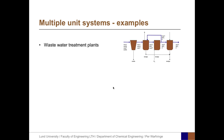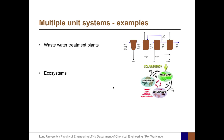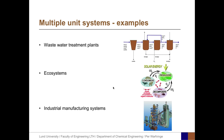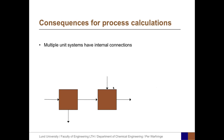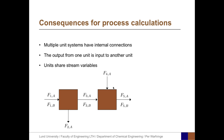Here we have one example of a multiple unit system — a wastewater treatment plant showing how various basins with different processes are connected by flows where there are fluxes of components or elements. Another example is an ecosystem where various trophic levels communicate and exchange mass. Industrial manufacturing systems may also contain several connected units. Multiple unit systems are characterized by internal connections, where the output from one unit is input to another unit, and the various units share stream variables.